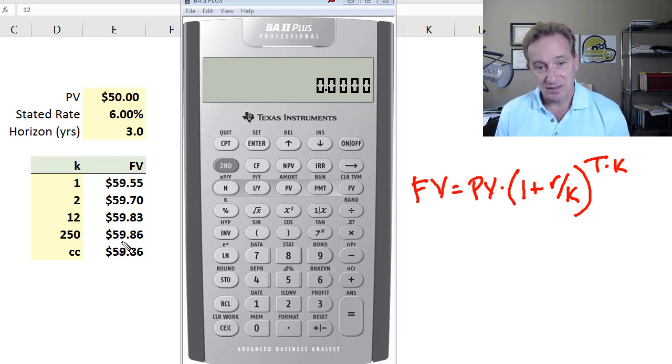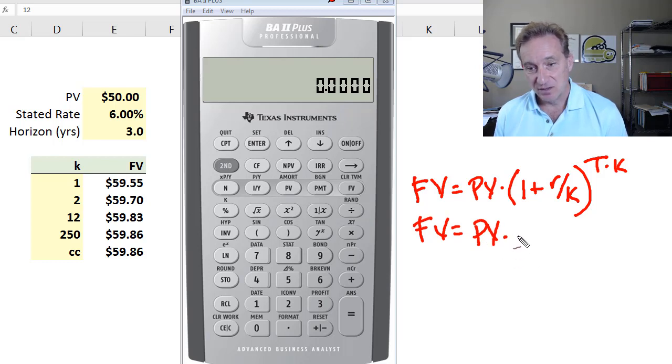This gives us the future value under any discrete compound frequency. Its analog in continuous terms is actually pretty elegant. We just take e raised to the rate times the horizon. In this case, 6% times 3 will be 18%. And we exponentiate that to get the continuous form. I'll do this now in the calculator. And I'm not going to do all the discrete forms. I'll just do the monthly, and then I'll do the continuous.